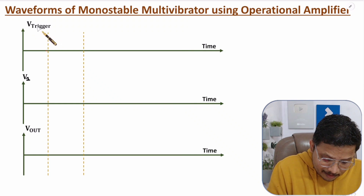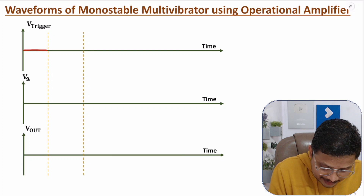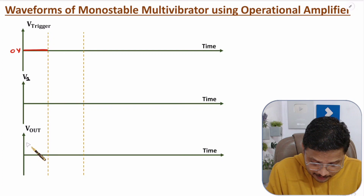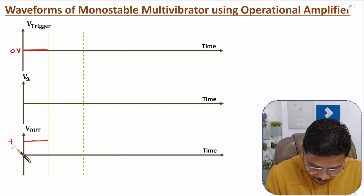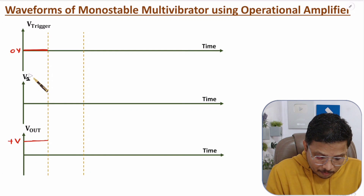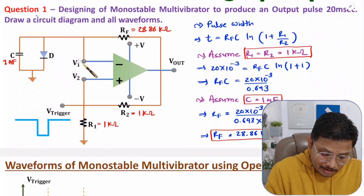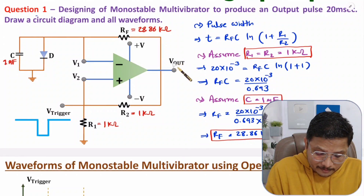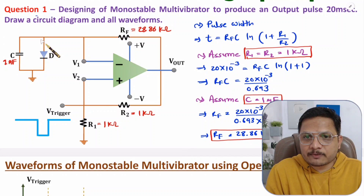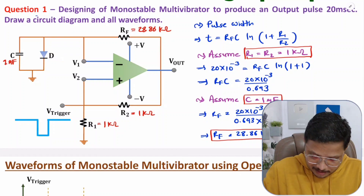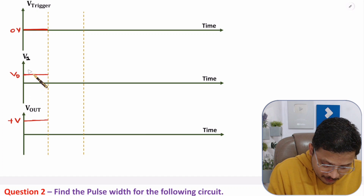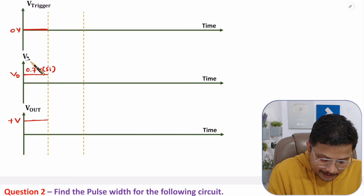When V-trigger has zero voltage, the monostable will stay in the stable state. The stable state has +V voltage at the output side. At that time the voltage at V1 is the voltage across the parallel combination of C and the diode. Since the output is +V, the diode comes into forward bias, so the voltage at terminal V1 will be the diode forward bias voltage V_D — which is 0.7 V for a silicon diode.